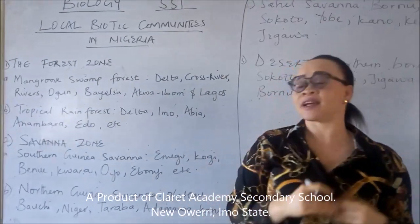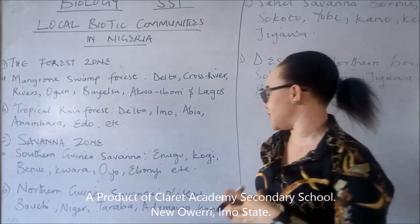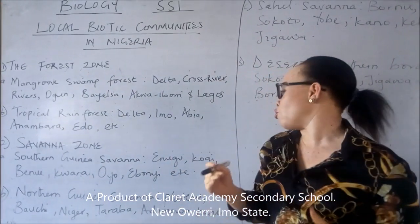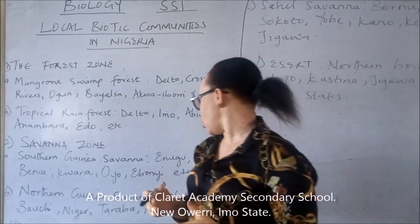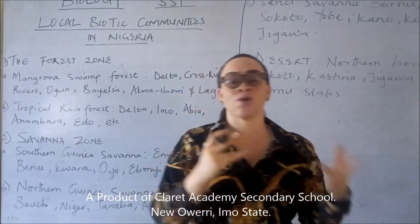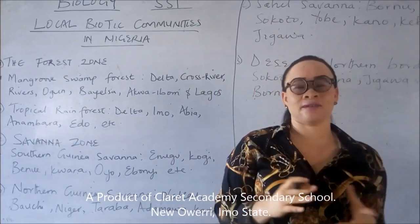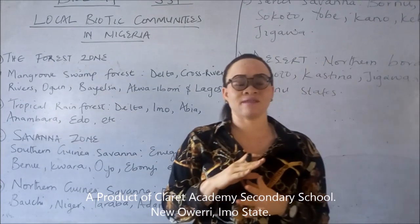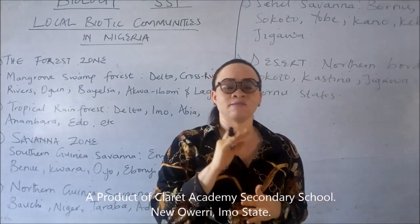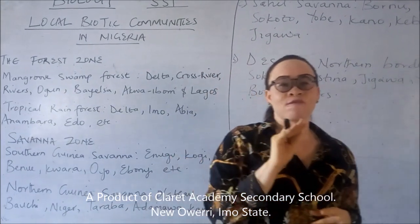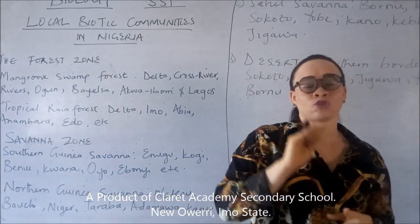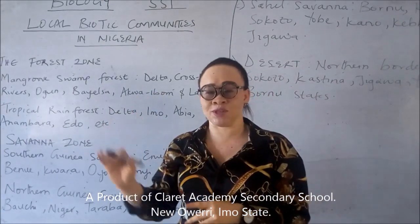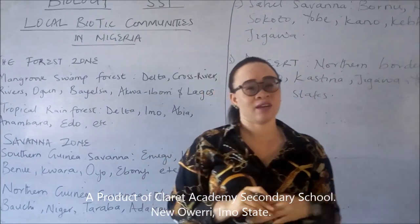The southern Guinea savannah can be found in states like Enugu, Kogi, Oyo, Ebonyi, Kwara, and the rest of them. Now the southern Guinea savannah is characterized by a rainfall of about 100 to 150 cm per annum.